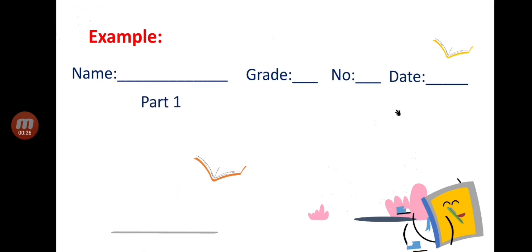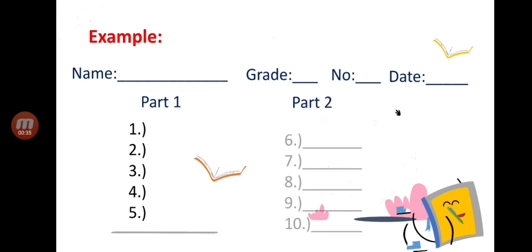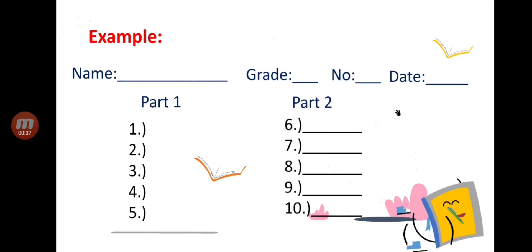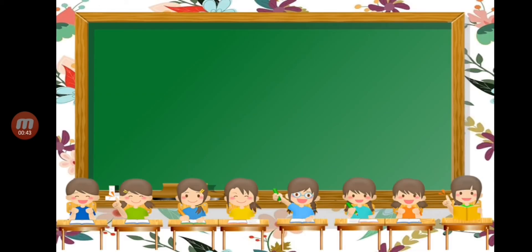For Part One we will have five items — this is multiple choice. For Part Two we will have labeling about plants. Are you ready? Let's proceed to Part One.